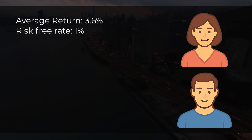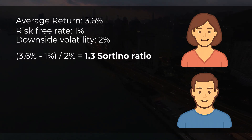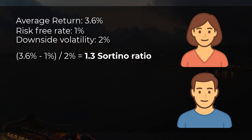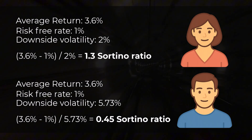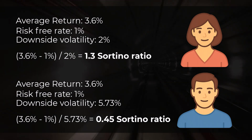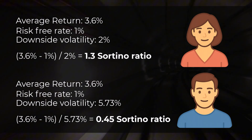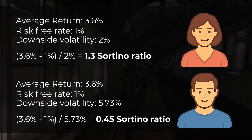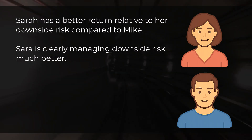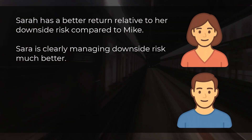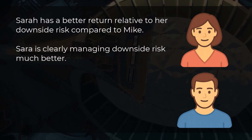To calculate Sarah's Sortino ratio, we take the average yearly return minus the risk-free rate, and then divide by the downside volatility. Sarah ends up with a Sortino ratio of 1.3, while Mike ends up with a Sortino ratio of 0.45. Sarah's higher Sortino ratio means she is earning a better return relative to her downside risk compared to Mike. Even though both have the same average return, Sarah is clearly managing downside risk much better.